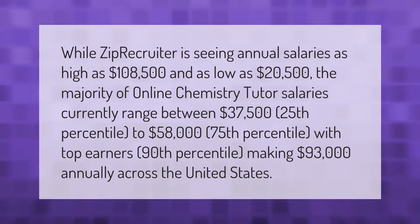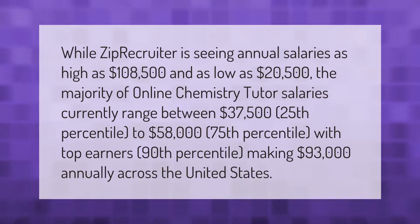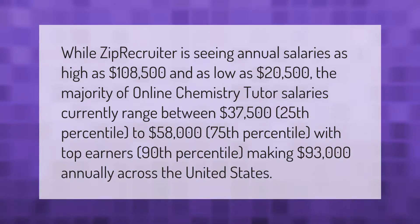According to ZipRecruiter, annual salaries for online chemistry tutors range as high as $108,500 and as low as $20,500. The majority of salaries currently fall between $37,500 (25th percentile) and $58,000 (75th percentile), with top earners at the 90th percentile making $93,000 annually across the United States.